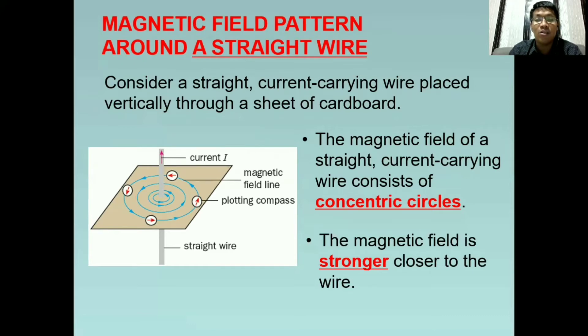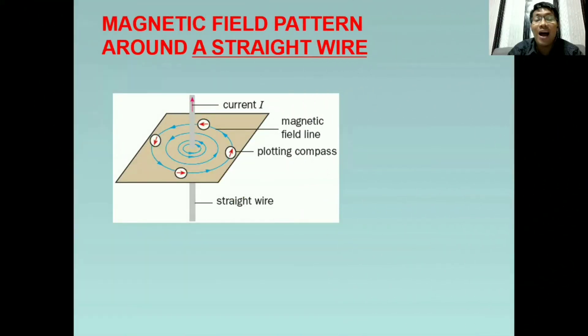Tatandaan natin, the magnetic field is stronger closer to the wire. That's why the circles here are much closer. So therefore, signifies stronger magnetic field. And as it moves away from the wire, it has lesser magnetic field.